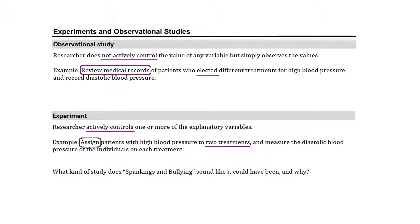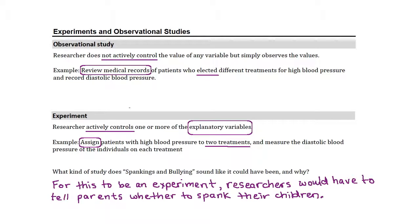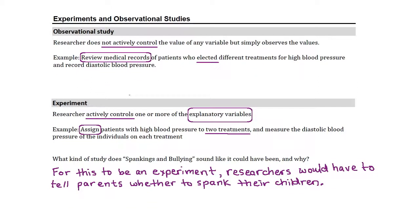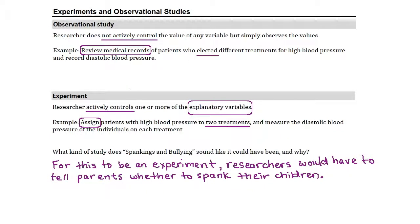If it were an experiment, the researchers would have to tell parents whether or not to spank their children. This raises several issues, some of which are ethical — we can't conduct a study on human subjects in which we are advocating harm. Second, what leads parents to spank or not spank is probably not determined by what they agreed to do in a study. So we can conclude this was an observational study.